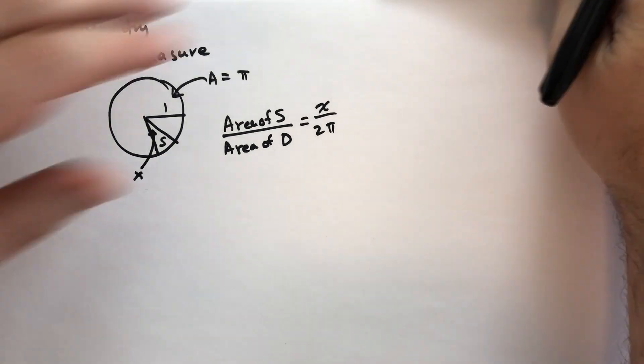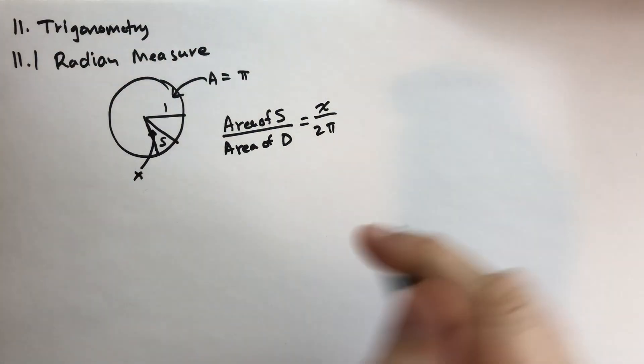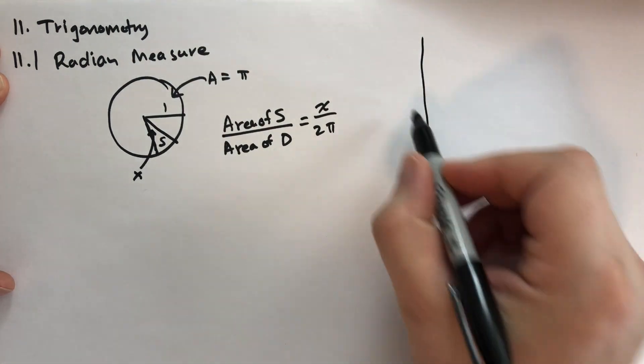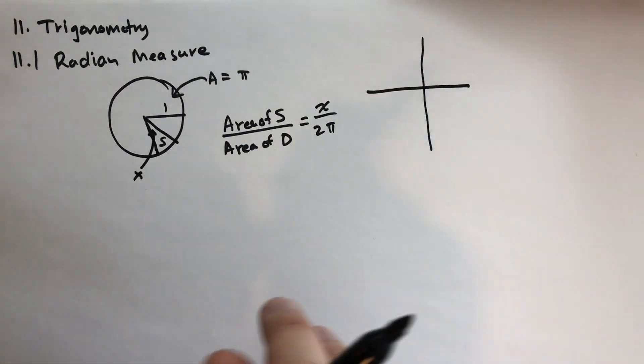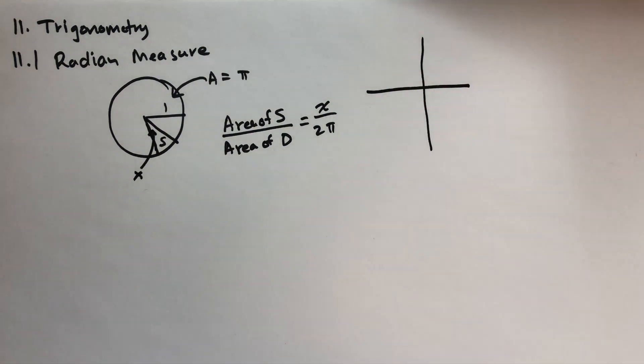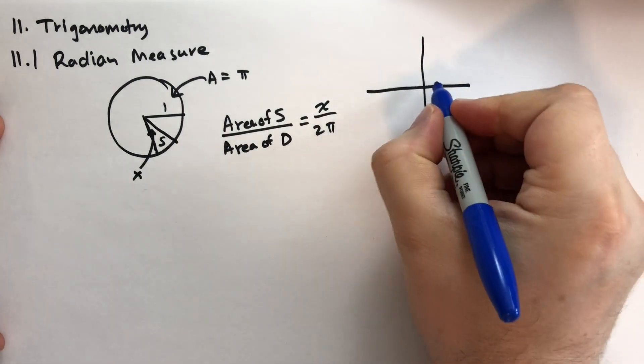So if X was 2 pi, that would be the entire circle. Let's just write down some of the common measures here. So let's start with what pi angles, pi degrees would give you, pi radians would give you.